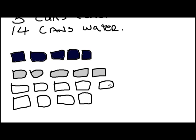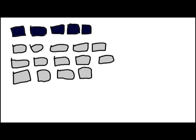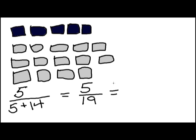So there's 14 cans of water and five cans of concentrate. So the total volume is 19. So it's five divided by 19. It's going to scroll up and you'll see. So five divided by 19.